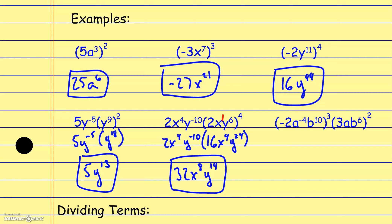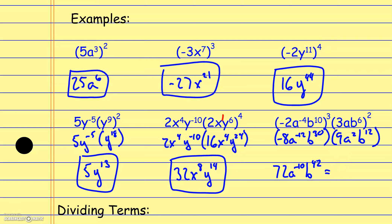Applying exponents first: negative 2 to the third is negative 8, multiplying exponents gives a to the negative 12th and b to the 30th. In the other parentheses, raised to the second power: that gives 9, a squared, and b to the 12th. Multiplying: 9 times negative 8 is negative 72, adding exponents gives a to the negative 10th and b to the 42nd. Since a has a negative exponent, it flips to the denominator, giving 72b to the 42nd over a to the 10th.